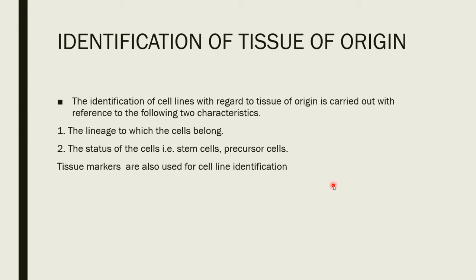A differentiated product can be used as a tissue marker. For example, albumin is used for hepatocytes, melanin for melanocytes, and hemoglobin for erythroid cells. Enzymes can also be used: tyrosine aminotransferase is specific for hepatocytes, tyrosinase is specific for melanocytes, and creatine kinase in serum serves as a marker for muscle cells. We can determine the origin of tissue with the help of these tissue markers.